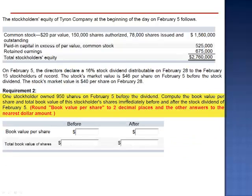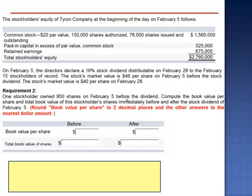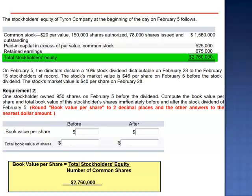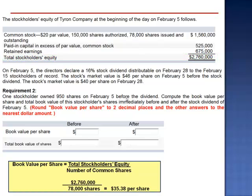Requirement 2. One stockholder owned 950 shares on February 5th before the dividend. Compute the book value per share and the total book value of this stockholder's shares immediately before and after the stock dividend of February 5th. Since there is no preferred stock, the book value per share is total stockholders' equity divided by the number of common shares. Before the stock dividend, this $2,760,000 company was being claimed by 78,000 shares of stock. The book value is $35.38 per share.